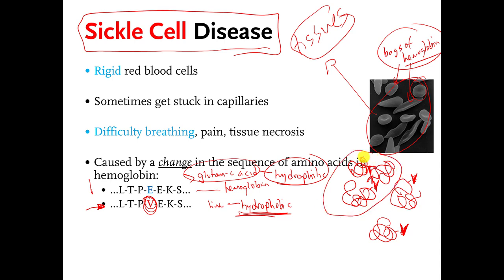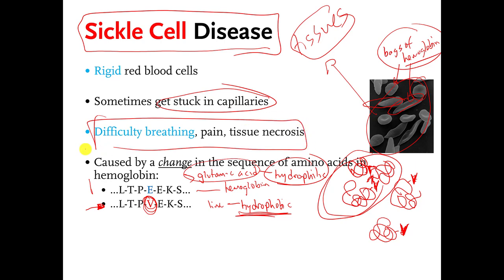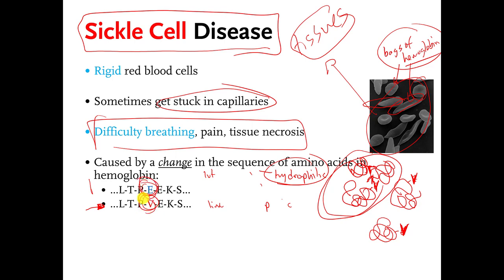And if they clump together enough, for people who have the disease, they end up making the red blood cell have this weird shape, which ends up making the red blood cells get caught in narrow blood vessels, which causes this horrible disease. So this horrible disease is caused by a really tiny change in a very important molecule — a tiny change that makes all of those molecules clump together because you went from a hydrophilic amino acid to a hydrophobic one.